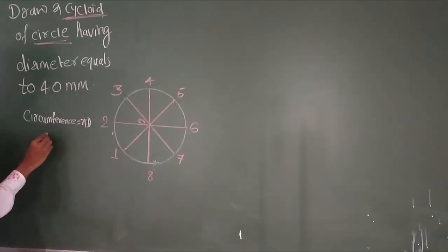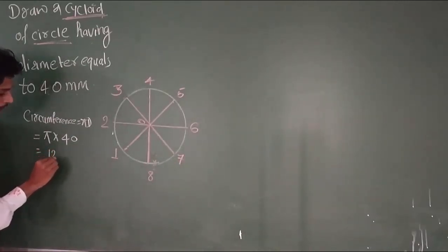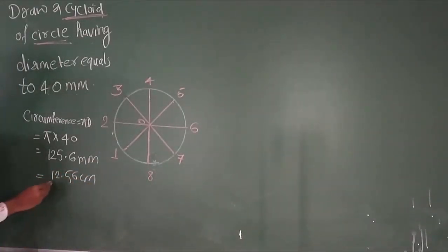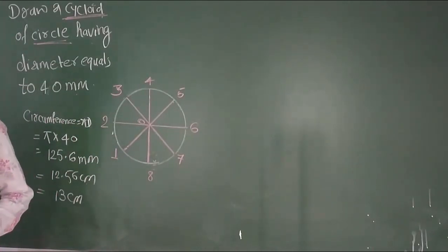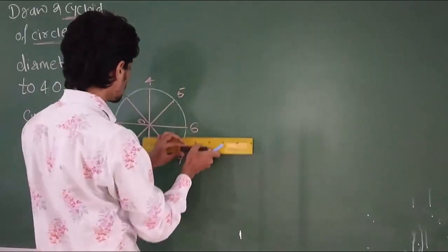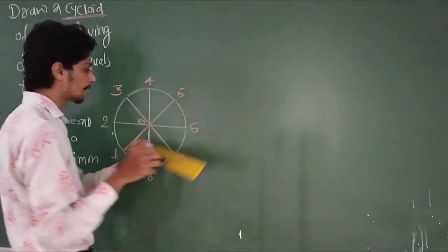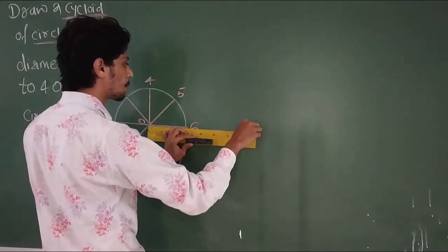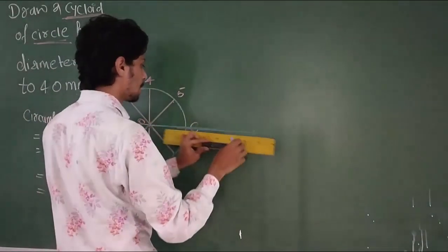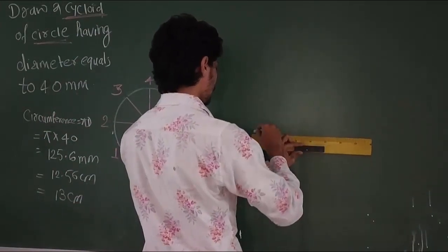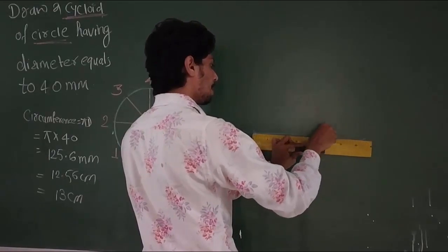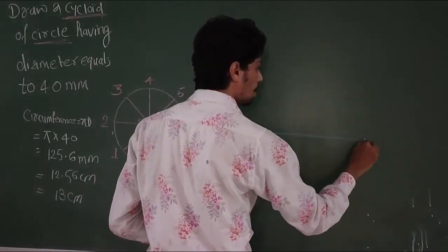Pi times diameter. This is 3.14 times 40, which equals 125.6 mm. So, from the starting point, we will draw a horizontal line of length 125.6 mm. You draw approximately 13 cm horizontally.